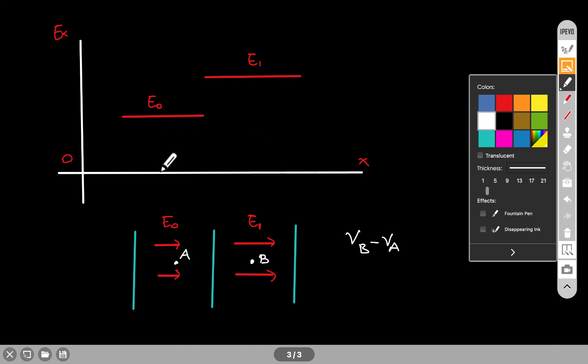Now, I've done here the graph of the electric field. It does change as a function of X because it gets stronger as you go to the right. So this is A, B is here. We know that to find the potential difference, you have to find